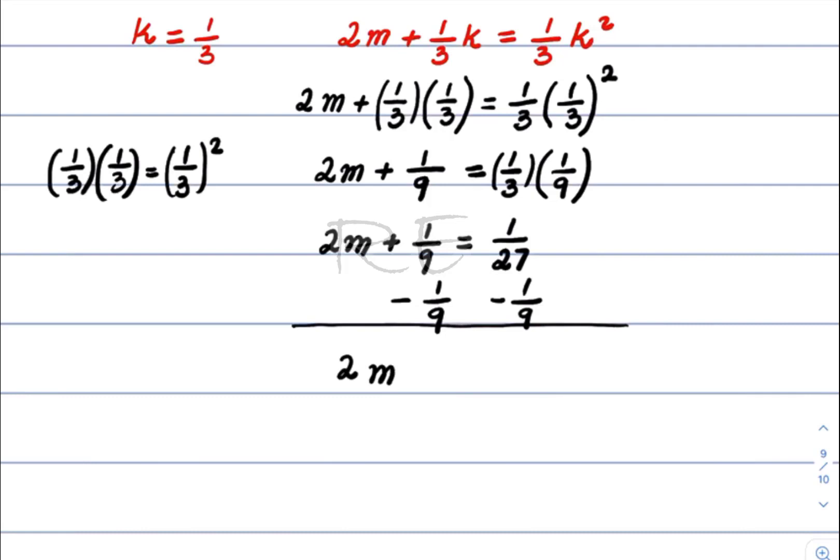We obtain 2m equals one-twenty-seventh minus one-ninth. The lowest common denominator is twenty-seven. To obtain 27 from nine, we multiply by three.